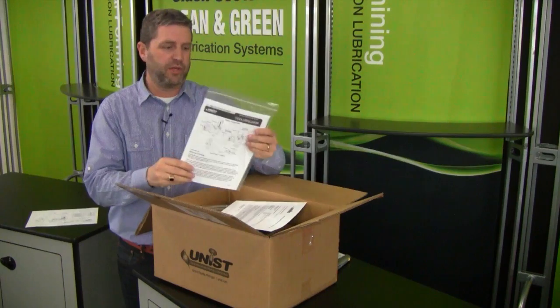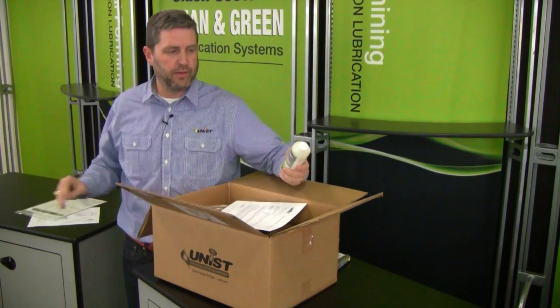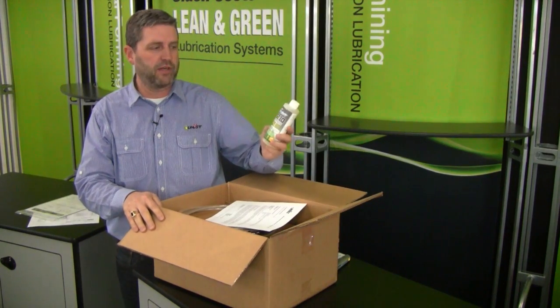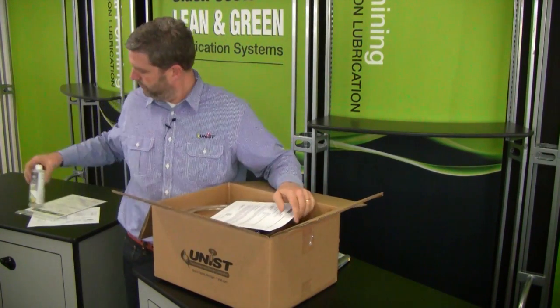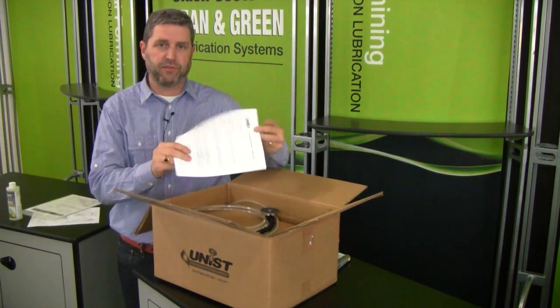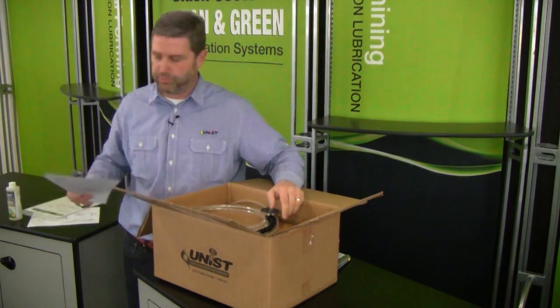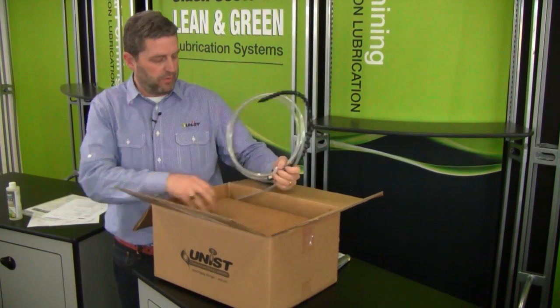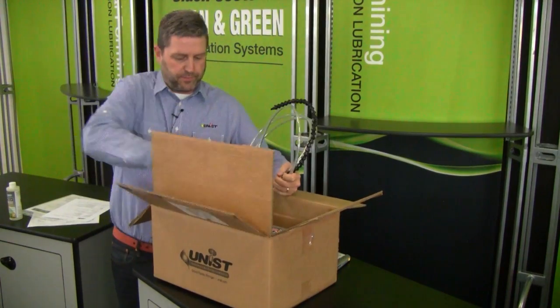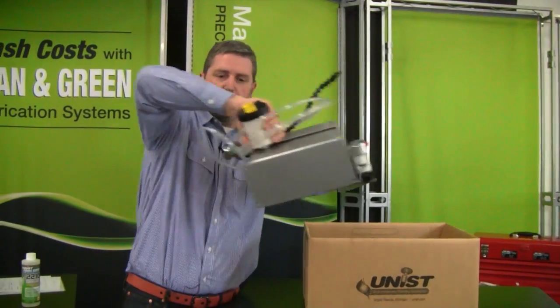It specifies the way your system was made, installation and operation manual, a cool lube sample to get you started on your MQL, the material safety data sheet for the cool lube, and then the base system will be inside the box. Let's remove the unit from the box.